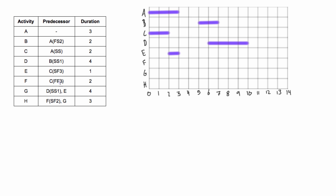Activity F depends on C, and it's a finish-finish relationship with a lag of three. So we find where C finishes - it finishes on day two. A finish-finish relationship with a lag of three means F can finish three days after C finishes. We count three days out - one, two, three - so that will be the finish point of F. But it has a duration of two, so it would have to start on day three if it's going to finish on day five.